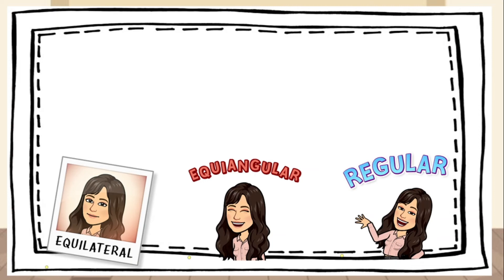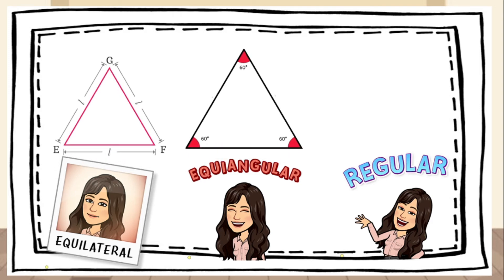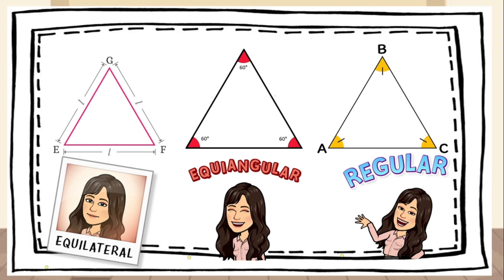We also have different types of polygons in terms of congruency of parts, and these are equilateral, equiangular, and regular. A polygon is equilateral if all its sides are equal, equiangular if all its angles are equal, and regular if it is both equilateral and equiangular.